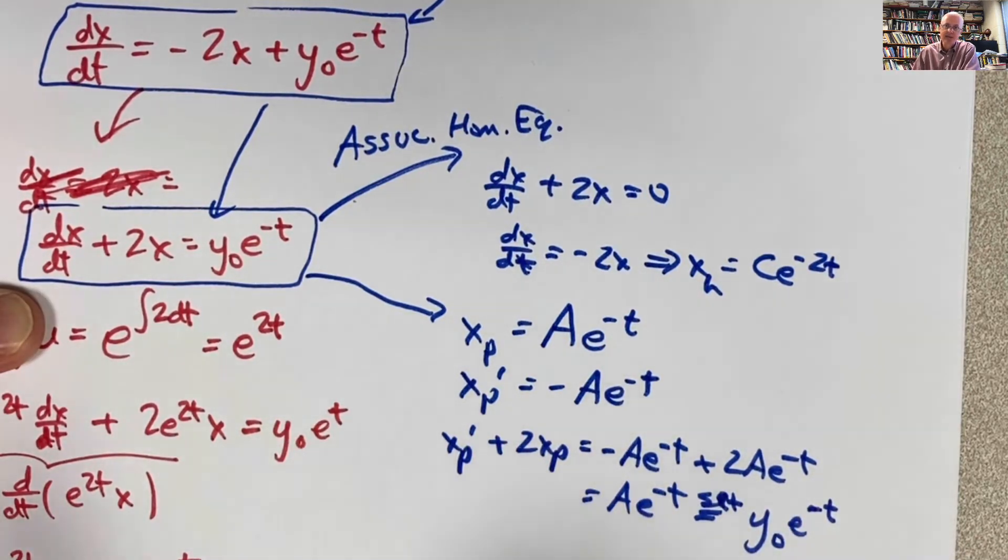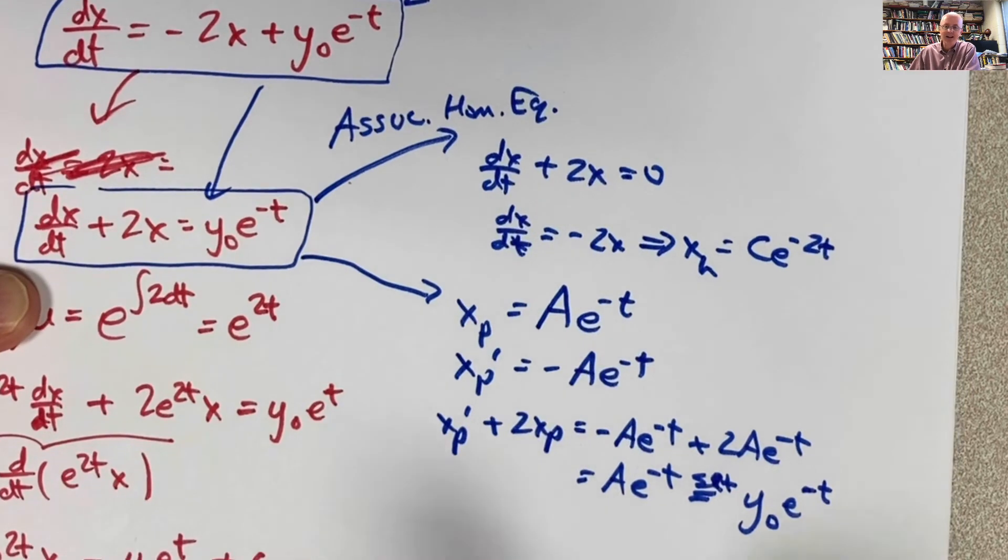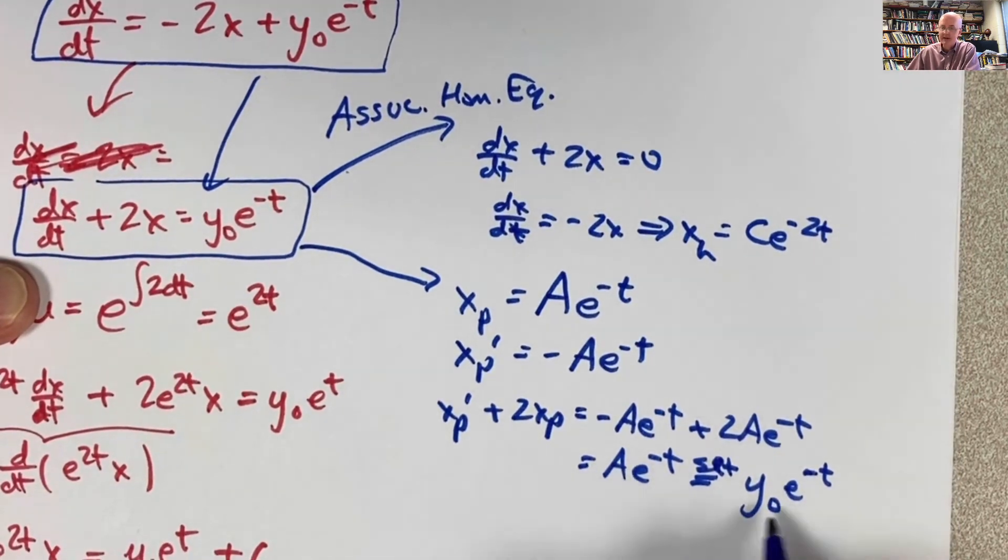Now remember, y0 is a specific given constant. a is a constant to be determined. I'm asking myself, does any choice of a make these two things equal for all t? And pretty obviously, it's simple here, a is y sub 0. That doesn't always happen. If you had gotten, say, 3a here, e to the negative t, then a would have been y sub 0 divided by 3. That sometimes happens. It just happens to be the case that a equals y0 here.